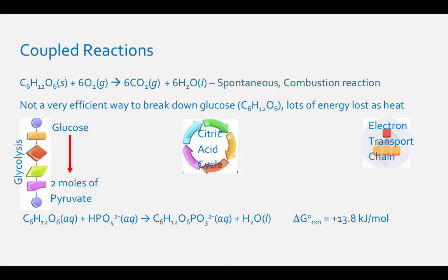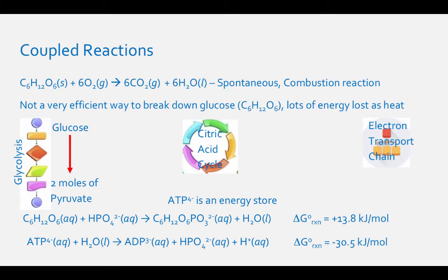This reaction is coupled with the hydrolysis of ATP-4 negative. This molecule is an energy store of your body. When this molecule breaks down into ADP-3 negative and a hydrogen phosphate ion, HPO4 2- negative, this is a spontaneous process with a delta-G-0 reaction of negative 30.5 kilojoules per mole. ATP-4 negative hydrolysis is coupled to a few reactions in glycolysis to make this process actually happen.